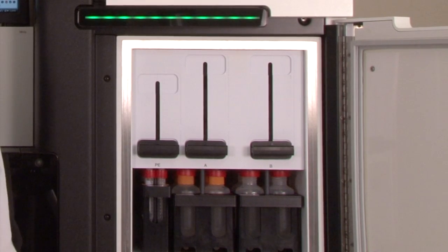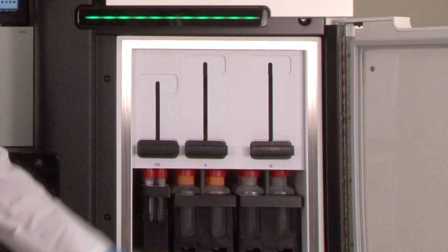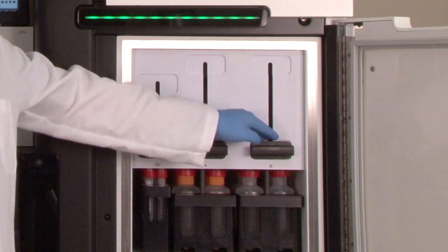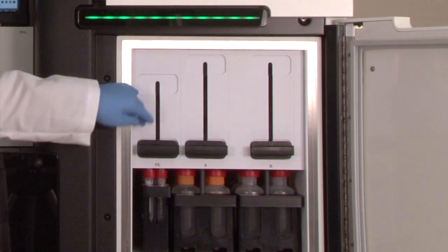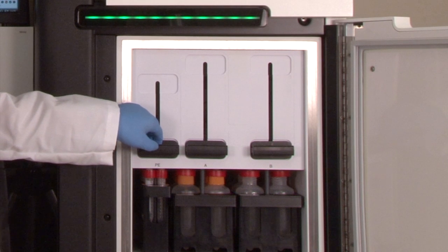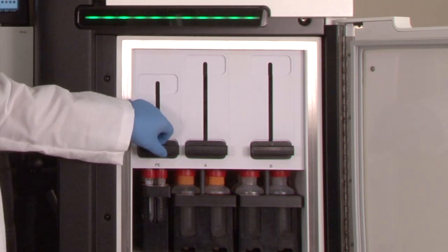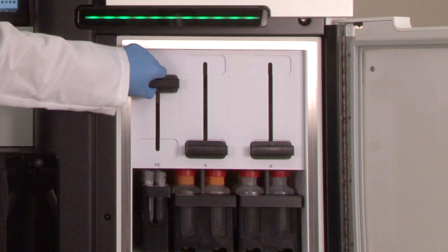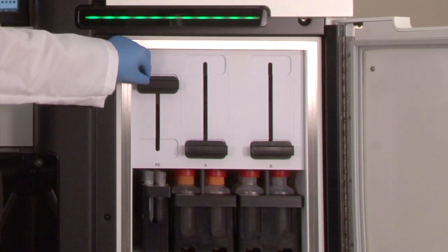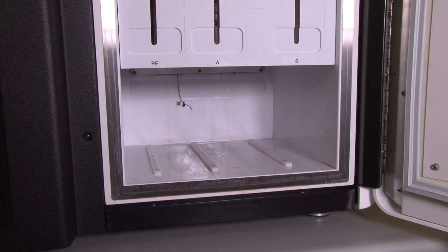The chiller compartment has room for racks of reagents for flow cell A, flow cell B, and a single rack for paired-end reagents for both flow cell positions. Each position has a handle that lowers sippers into the reagent bottles held in the rack.